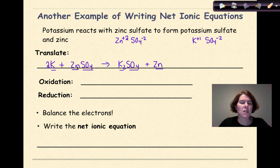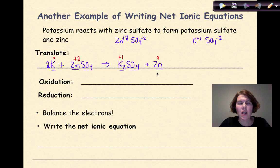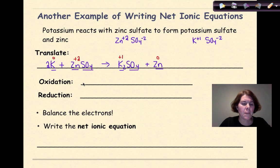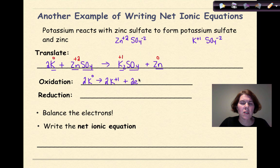Now I'm going to assign oxidation numbers. K is going to be 0. Zn is going to be plus 2. The SO₄ I'm not going to touch — it's a polyatomic and is not going to be involved in this redox reaction. K on the product side is going to be plus 1, and Zn by itself is going to be 0. So K is going from 0 to plus 1 — that is what's going to be oxidized. I'm going to bring my coefficients down: 2K⁰ yields 2K⁺¹, losing a total of 2 electrons, as each potassium atom loses its 1 valence electron.